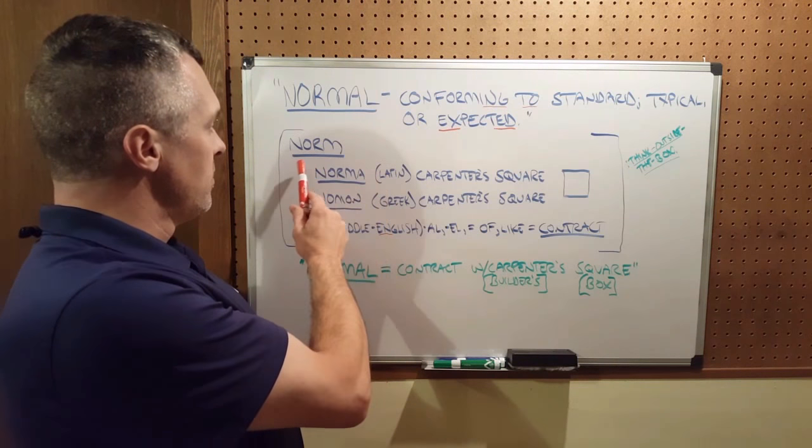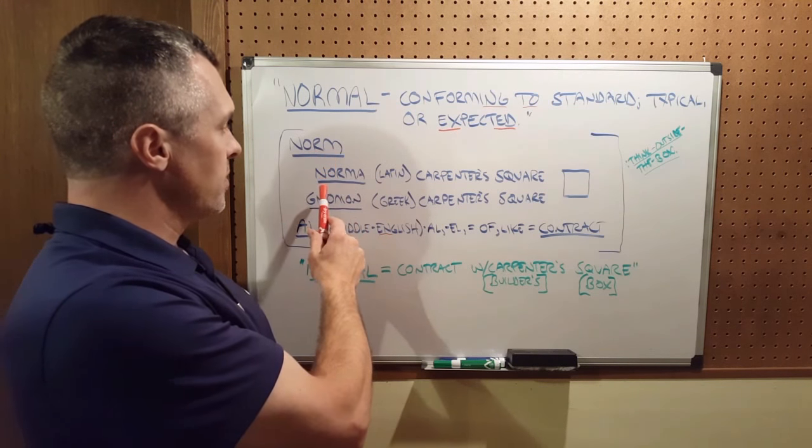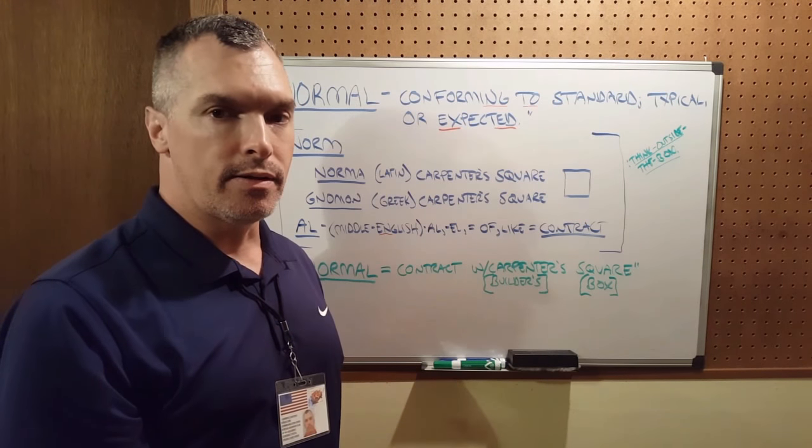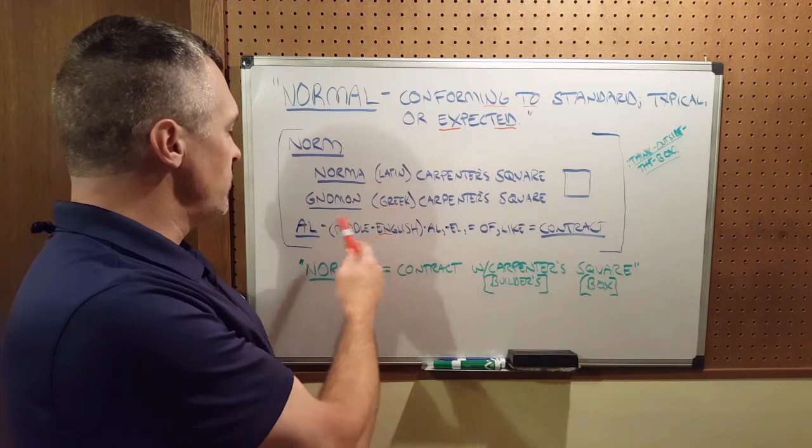When we parse it, the root word norm comes from Latin norma, which means carpenter's square. It also comes from Greek nomon, which means carpenter's square.